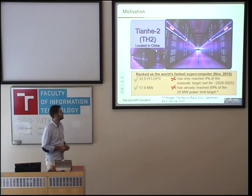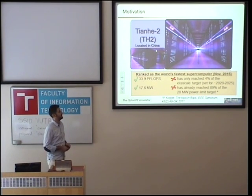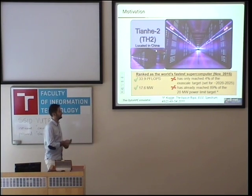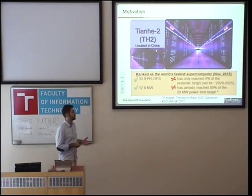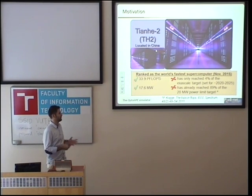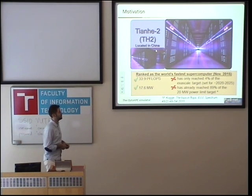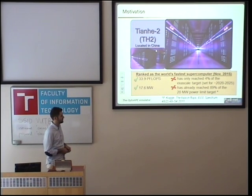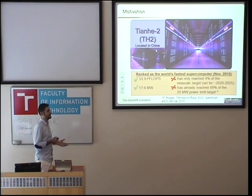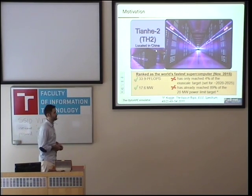Here you can see the Tianhe2 supercomputer, which is located in China. It has been ranked as the world's fastest supercomputer. Regarding its performance, it can deliver around 34 petaflops. The problem is that it has only reached 4% of the exascale target, which has been set for somewhere between 2020 and 2025. And the power consumption of this supercomputer is around 17.6 megawatts.